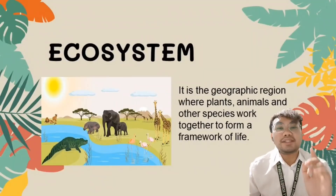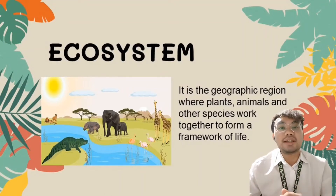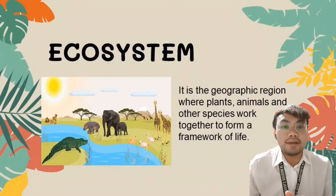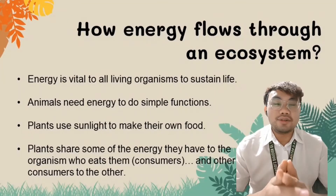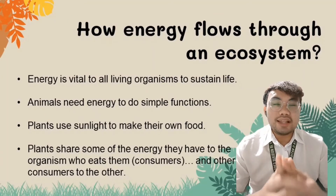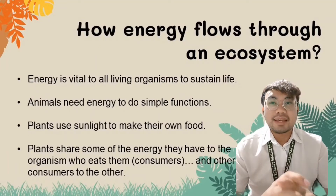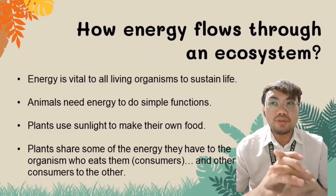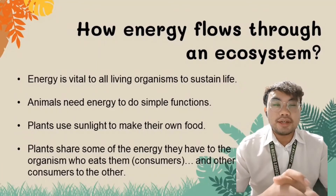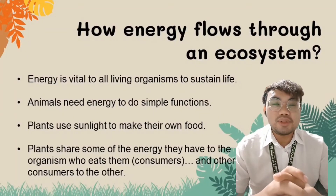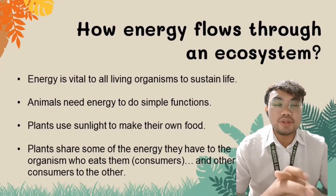An ecosystem is the geographic region where plants, animals, and other organisms work together to form a framework of life. Energy is vital to all living organisms to sustain life. The primary source of energy is the sun, which is the key for plants to make their own food. Animals need energy to do simple functions. Plants share some of the energy they have to the organisms who eat them, and other consumers to others.